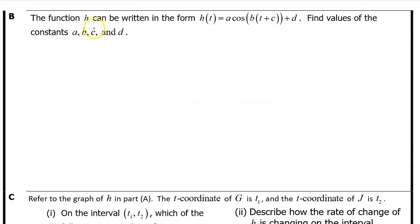Part B. The function h can be written in the form h of t equals a times the cosine of b times t plus c plus d. Find the values of the constants a, b, c, and d.